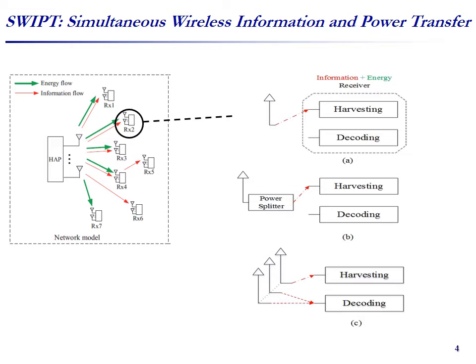More specifically, for the time-switching scheme, the whole transmission timeline is divided into two parts: one is used for energy harvesting, and the remaining time is used for decoding information. Similarly for the power-splitting scheme, where the power is divided into two parts — one for the energy harvesting receiver and another one for the information receiver. And the same for antenna-switching: a number of antennas is used for energy harvesting and the remaining ones are used for decoding information.